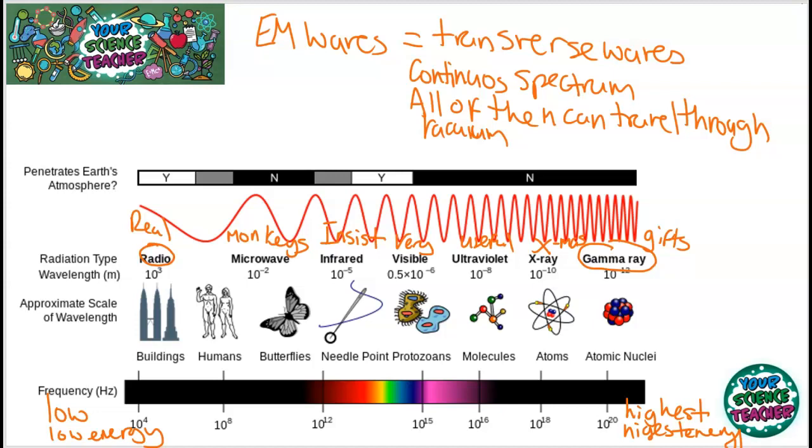This will be significant later on when we look at which types of radiation are ionizing. To give some perspective of the size of these waves, I've got approximate scale of the wavelengths here. Radio waves are about the size of buildings, microwaves can be between the size of humans and butterflies, infrared the size of needle points, visible light the size of some single cellular organisms.